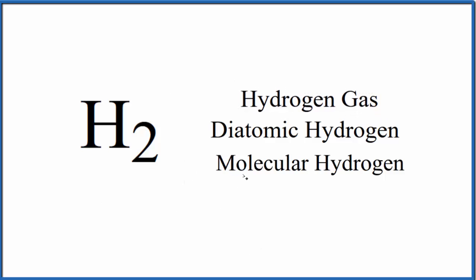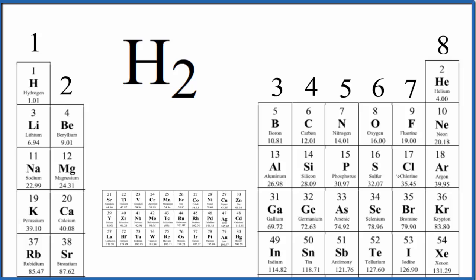To write the Lewis structure, the first thing we need to do is figure out how many valence electrons we have for H2. If we look at the periodic table organized by the number of valence electrons in each group, group 1, where we have hydrogen, all of these have one valence electron. So here's our hydrogen, one valence electron. We have two hydrogen atoms. We're going to multiply that by two. We have a total of two valence electrons for the H2 Lewis structure.